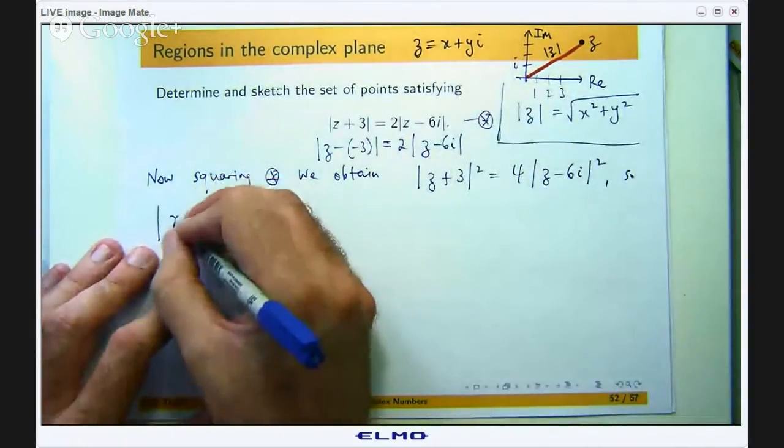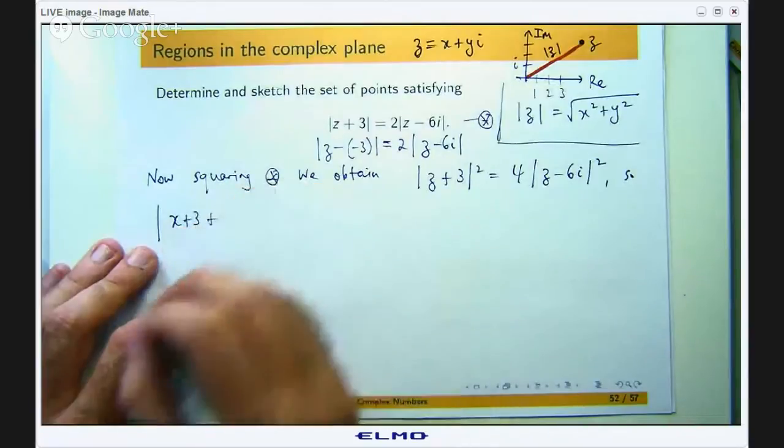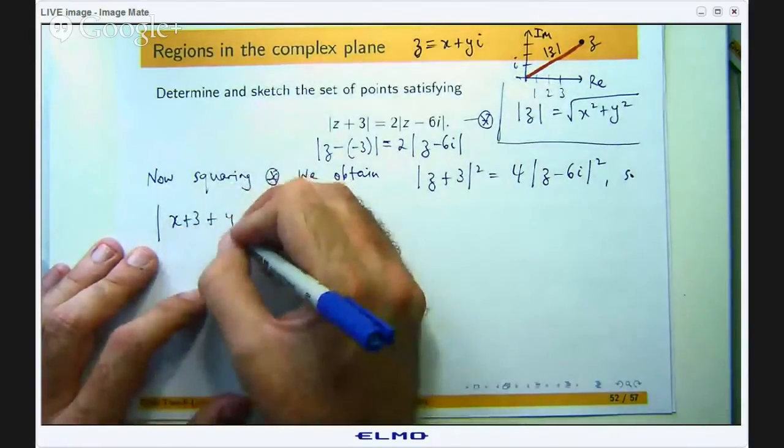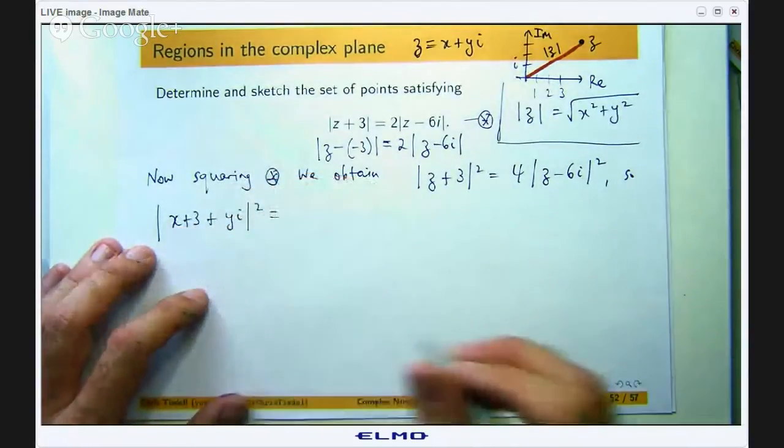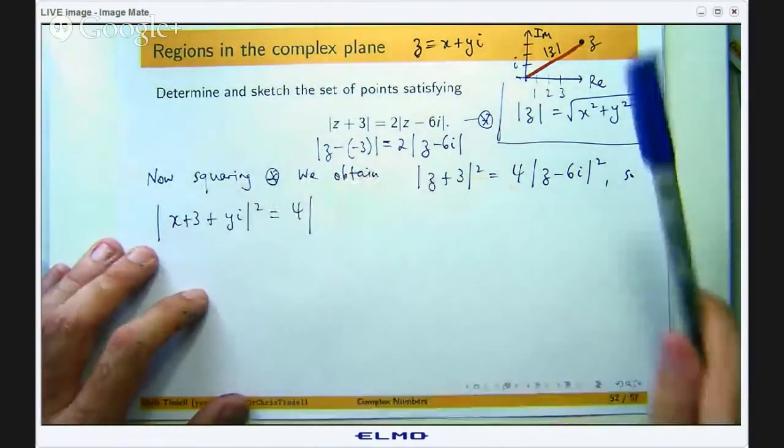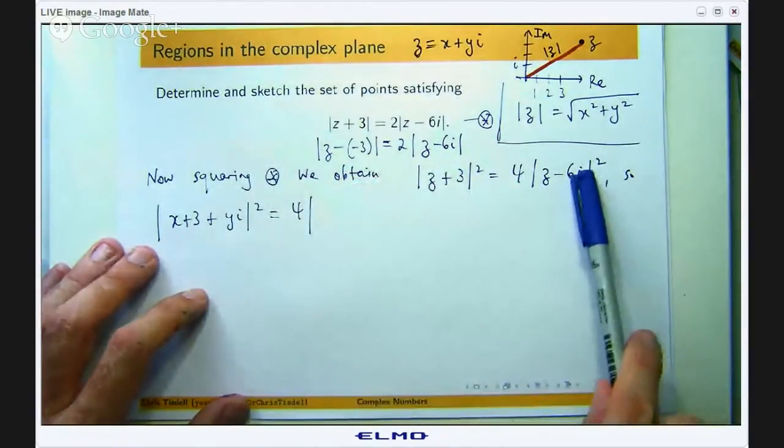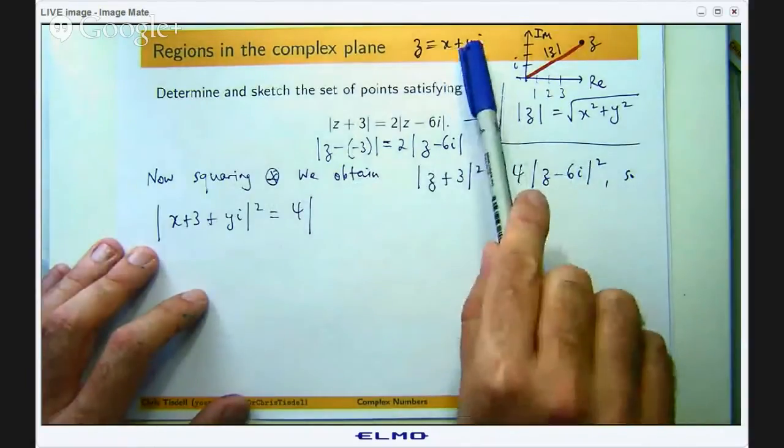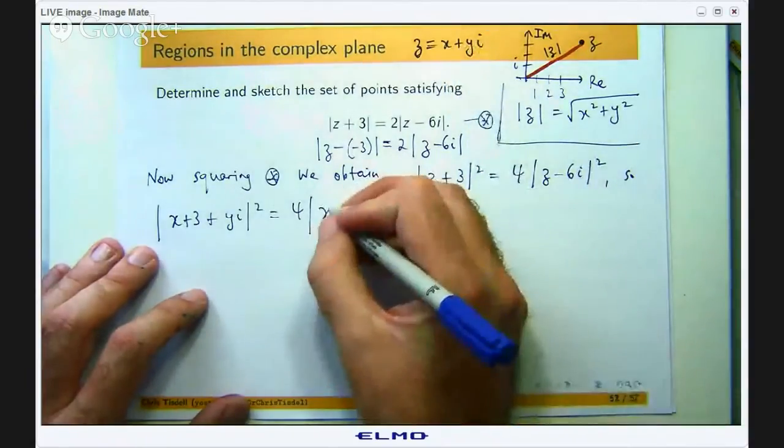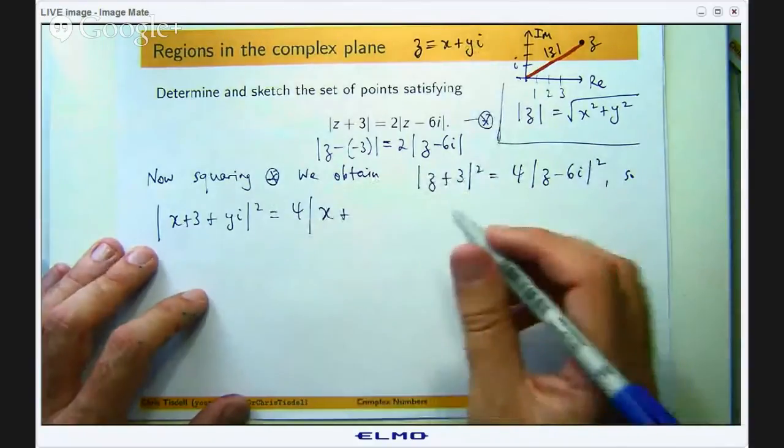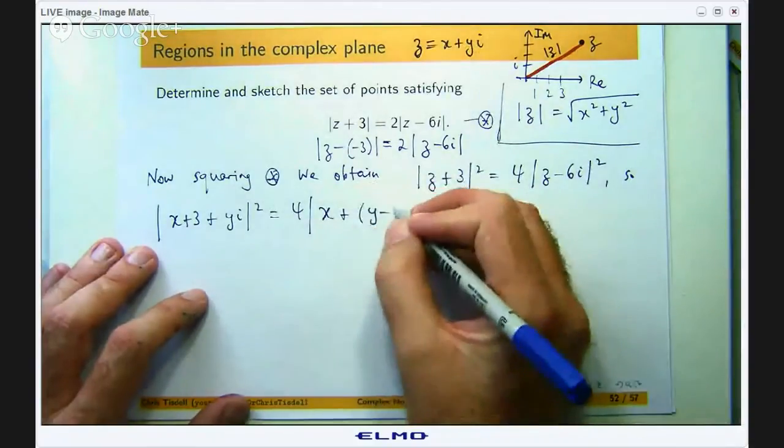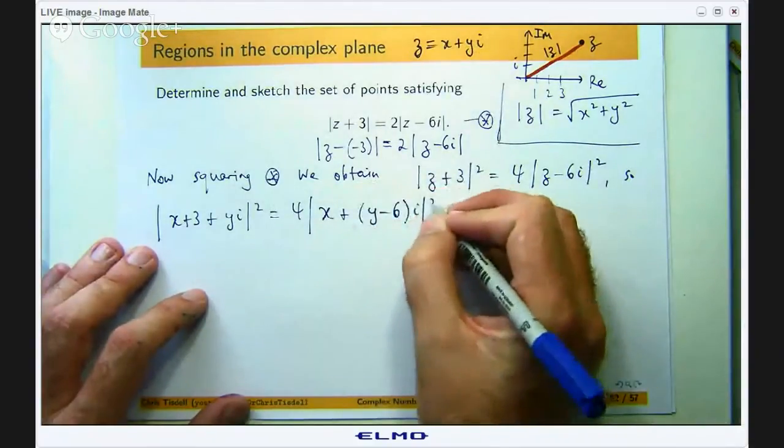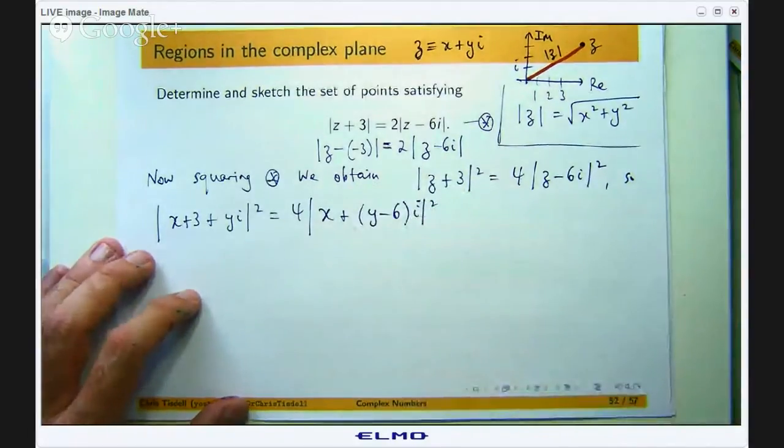Now in the Cartesian form let us replace z with x plus yi and I will get the following. I am just going to put the 3 and the real part of z together and over here because I have got an i here, z minus 6i will be x plus yi minus 6i so I can group the imaginary parts together and this is what I want.